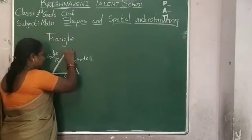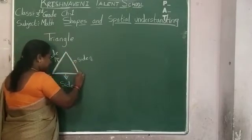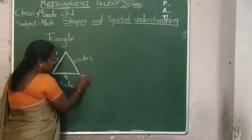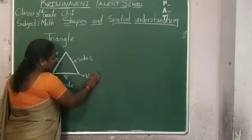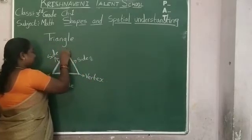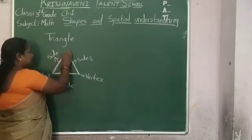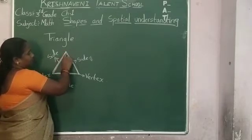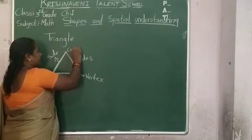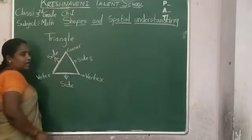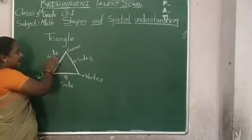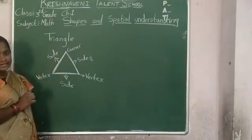Again, another line segment and the third line segment meet at a common end point — there you also get a vertex, a corner. And the third line segment and the first line segment also meet at one point — this is also called a vertex or corner.